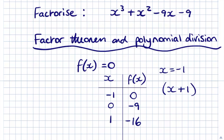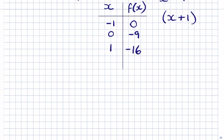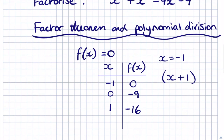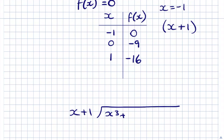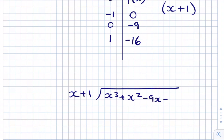Now we've got a linear factor, we can divide our cubic equation by it to get a quadratic result. The way we do that is using polynomial division, which is essentially long division using the bus stop method you'll be familiar with from primary school — just using algebraic terms instead.